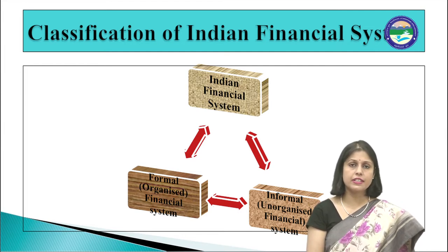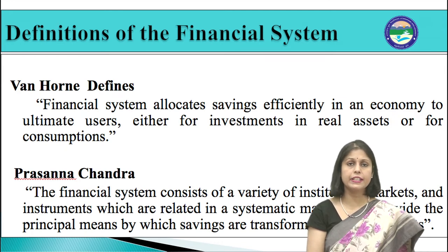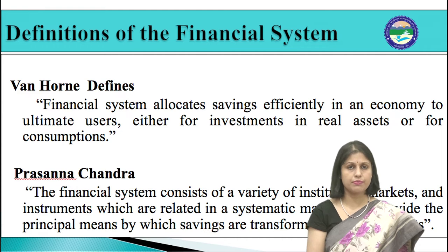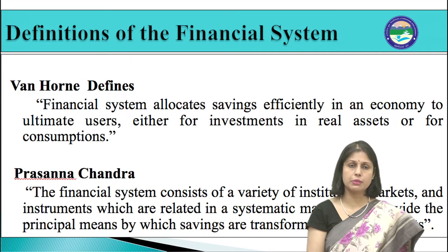Regarding definitions of the financial system: Van Horn defines that financial system allocates savings efficiently in an economy to ultimate users either for investment in real assets or for consumption. As per Prasanna Chandra, the financial system consists of a variety of institutions, markets, and instruments which are related in a systematic manner and provide the principal means by which savings are transformed into investments.